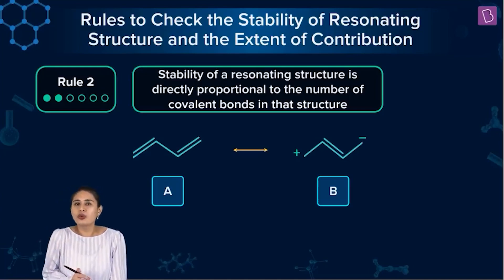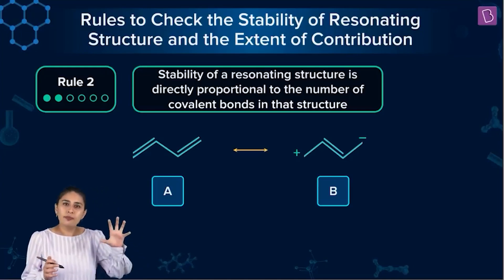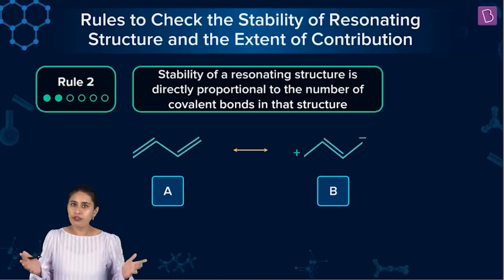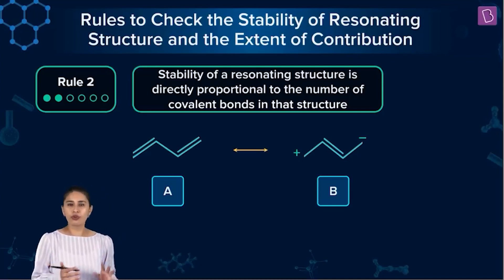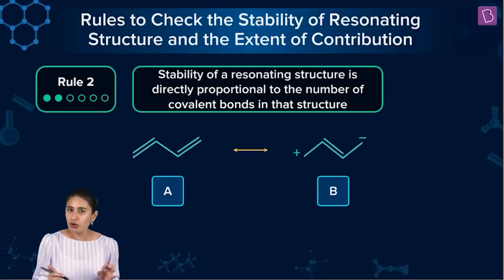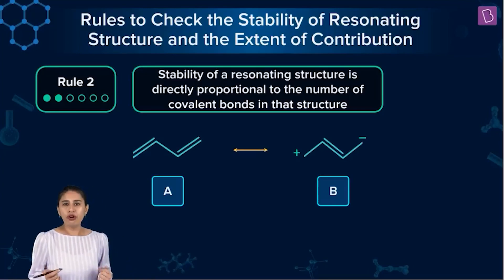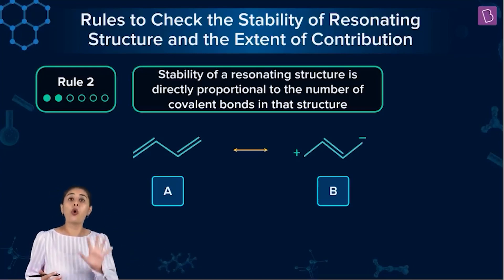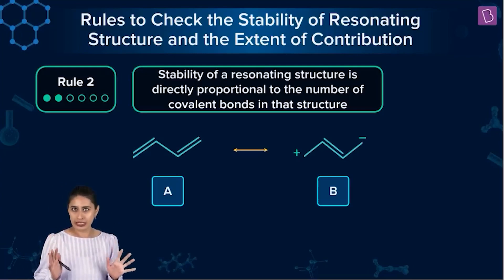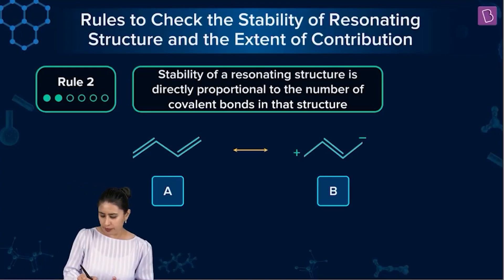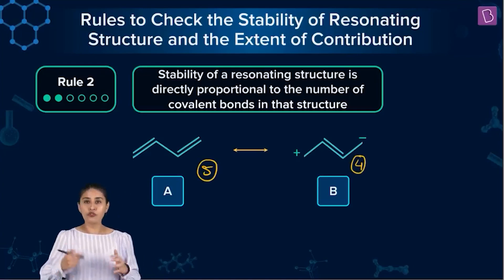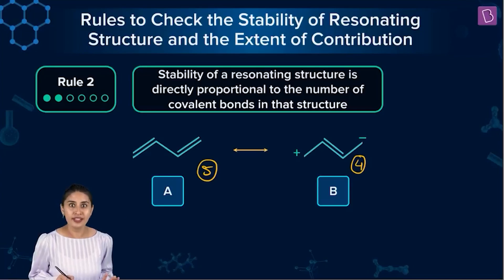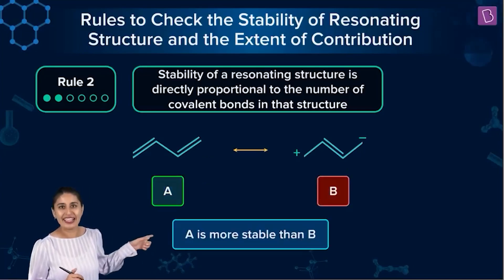I have a tendency of not counting carbon–hydrogen bonds, since the position of nuclei is not changing and all that changes is the positions of the pi bond. So I count bonds other than C–H bonds, though you can count all covalent bonds if you prefer. Counting the carbon–carbon bonds: structure A has five, structure B has four. More covalent bonds means more stability, so the answer is A.